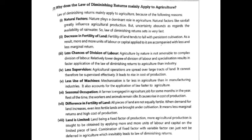Next is less use of machines. Machines in the agriculture sector, as compared to manufacturing industry, are used discontinuously. This is why the law of diminishing returns is applicable to agriculture.